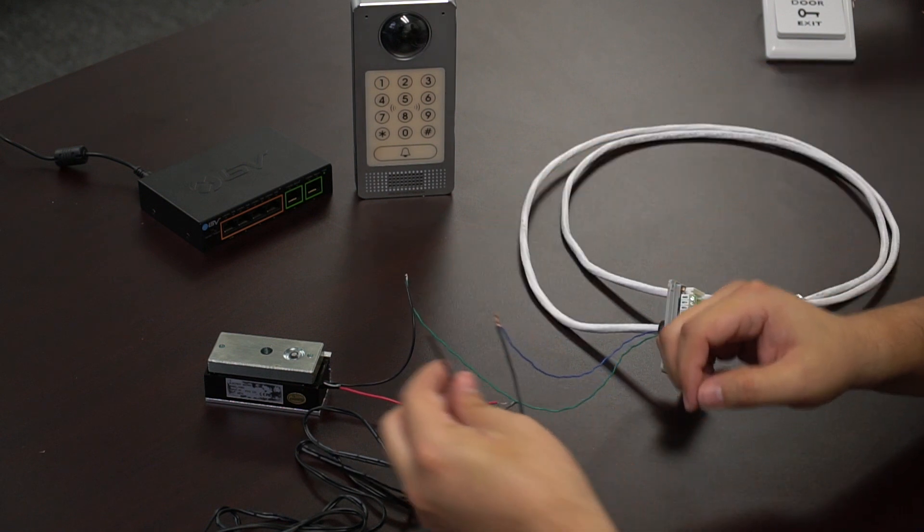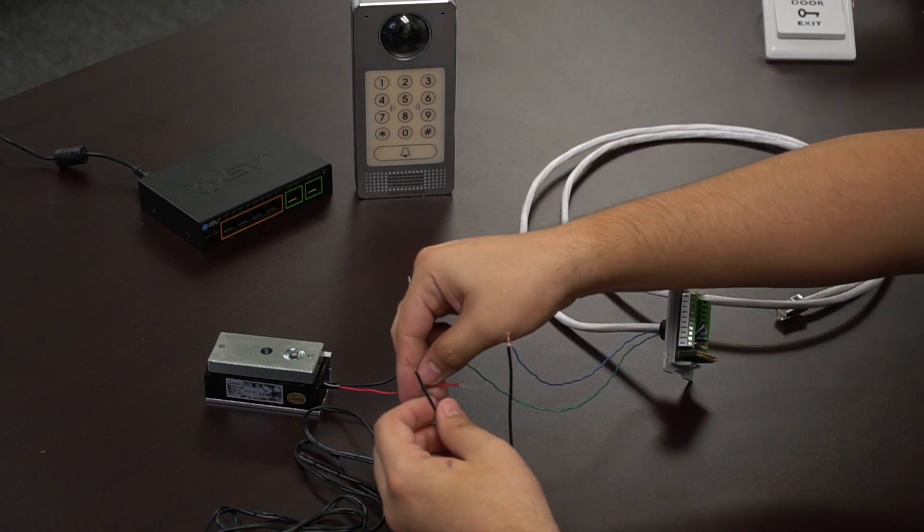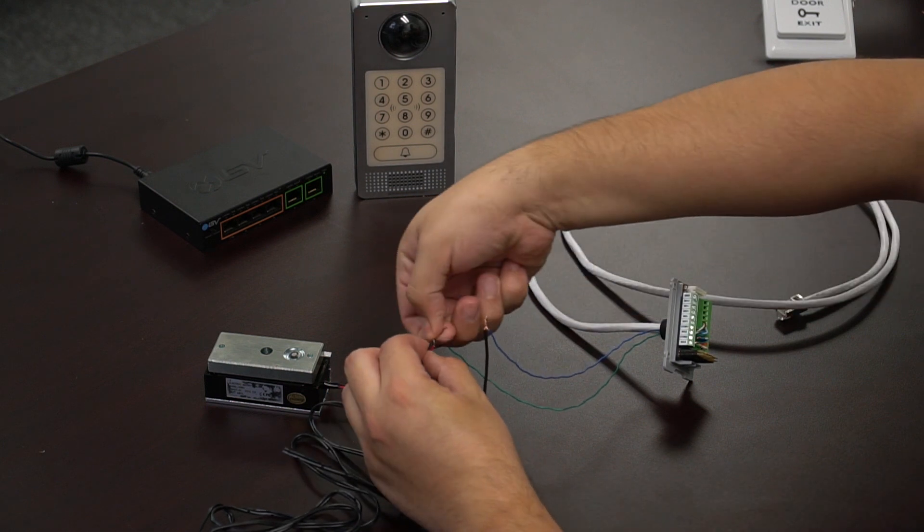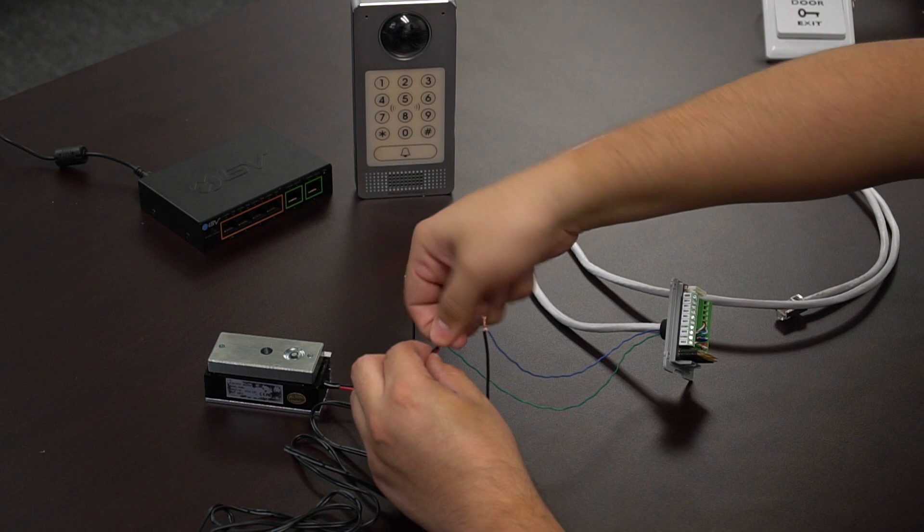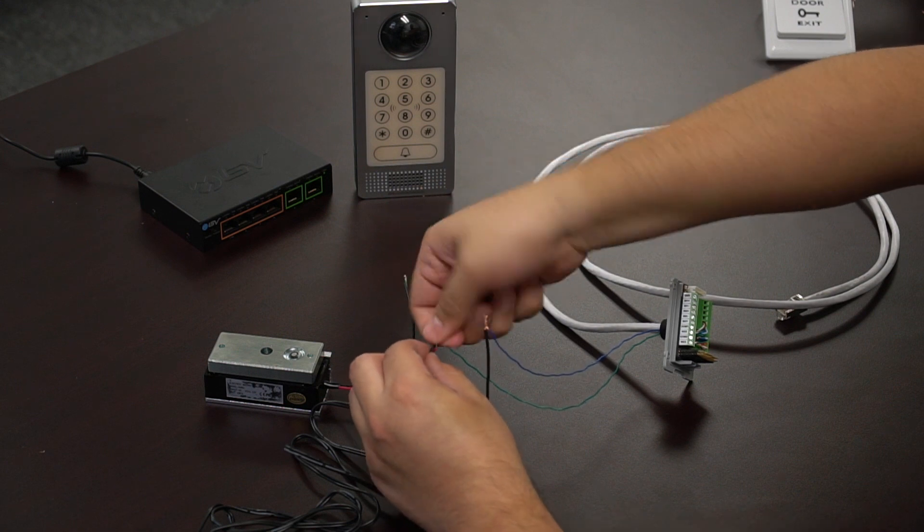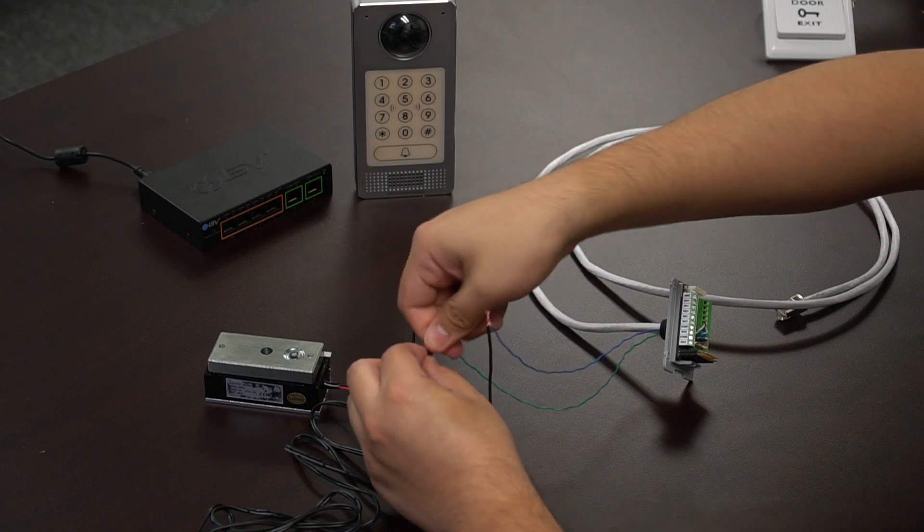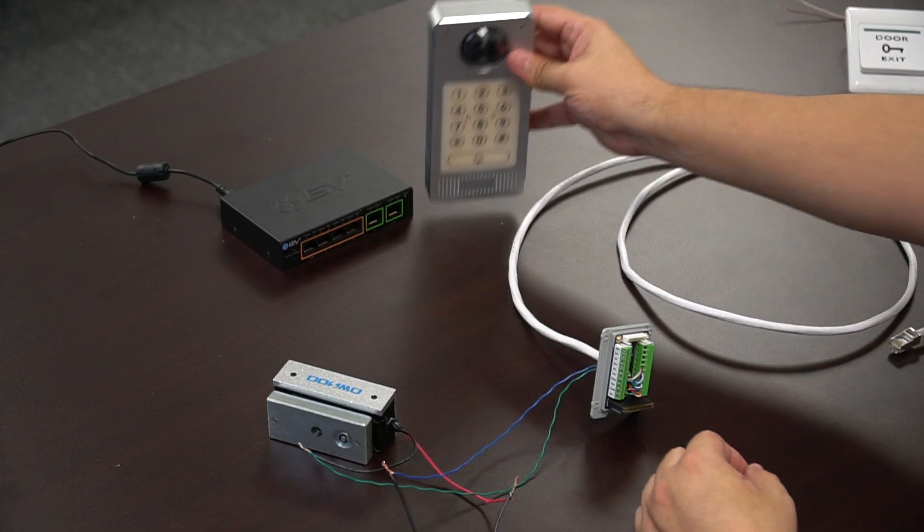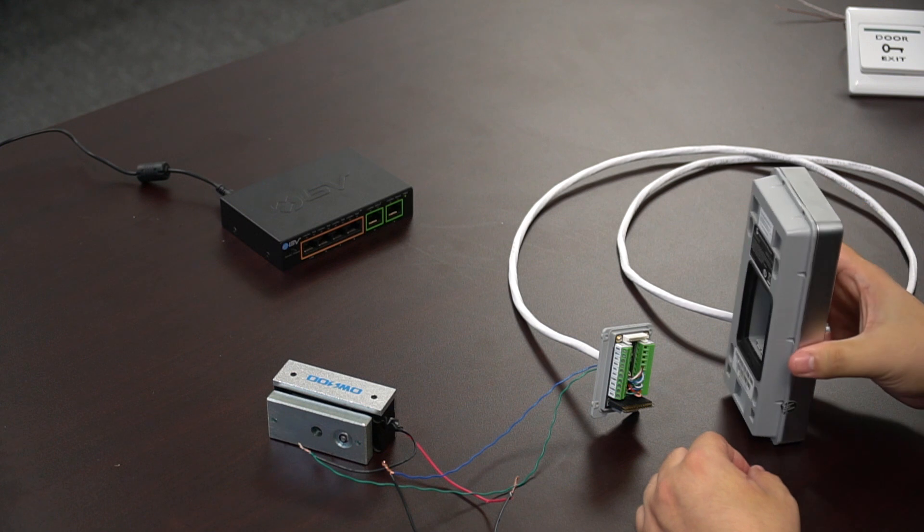Alright, once those two wires are connected, we're going to go ahead and plug the power end of the power supply directly to the power of the magna lock. Here, now we're only hooking up these three wires because we're going to actually plug everything in and make sure that it all works. And this is going to test the power supply.